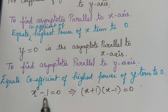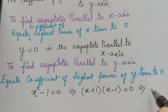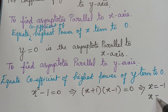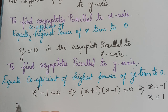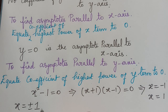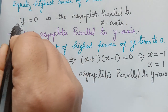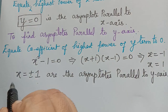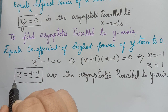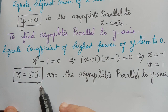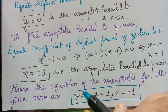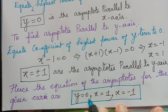From (x + 1)(x − 1) = 0, we obtain x = −1 and x = 1. Therefore, x = ±1 are the asymptotes parallel to the y-axis. There are three asymptotes for the given curve: y = 0, x = 1, and x = −1. Hence, the equations of the asymptotes for the given curve are y = 0, x = 1, and x = −1.